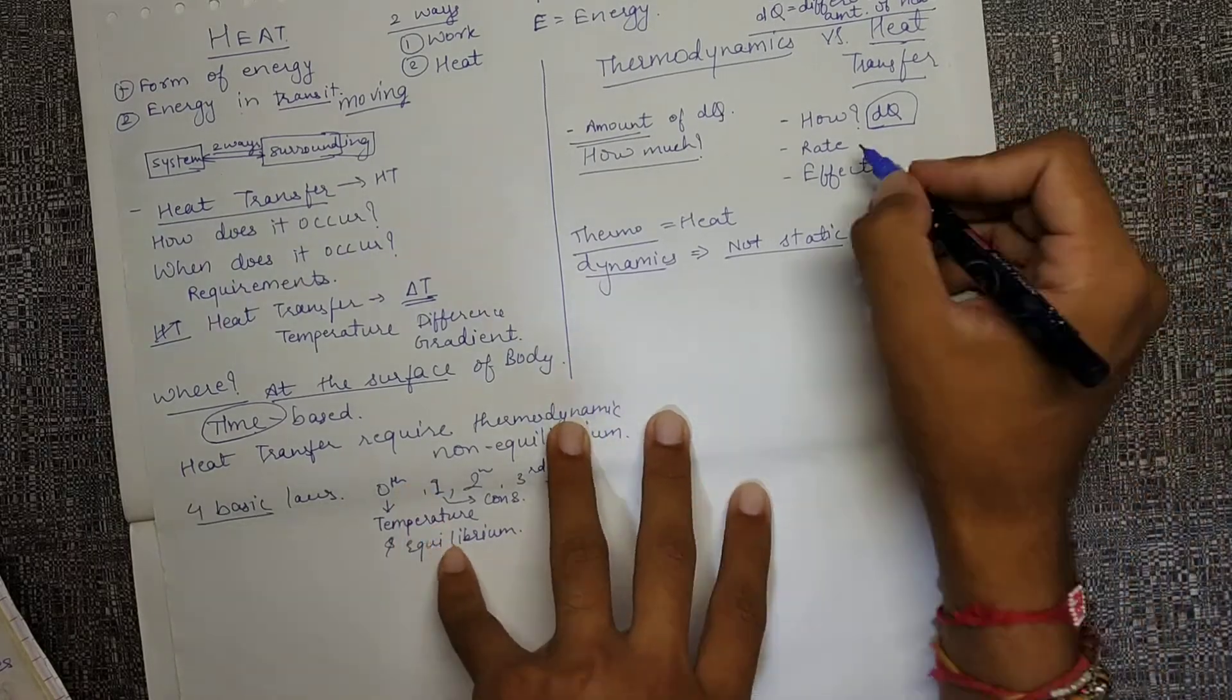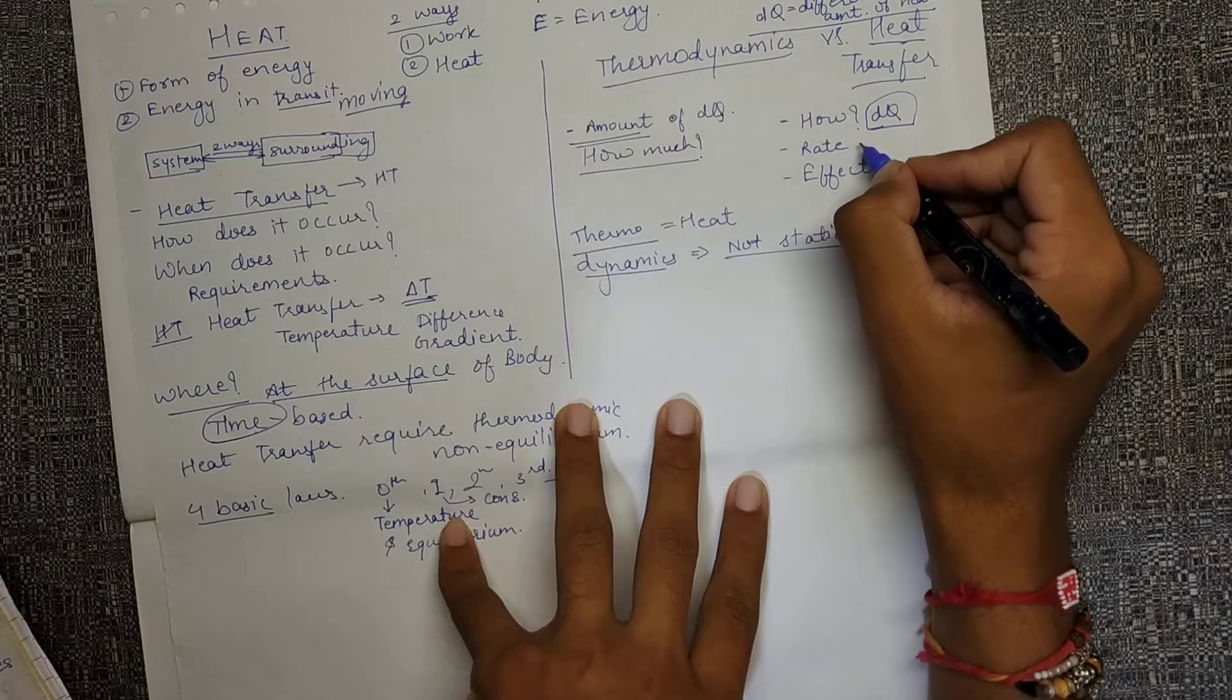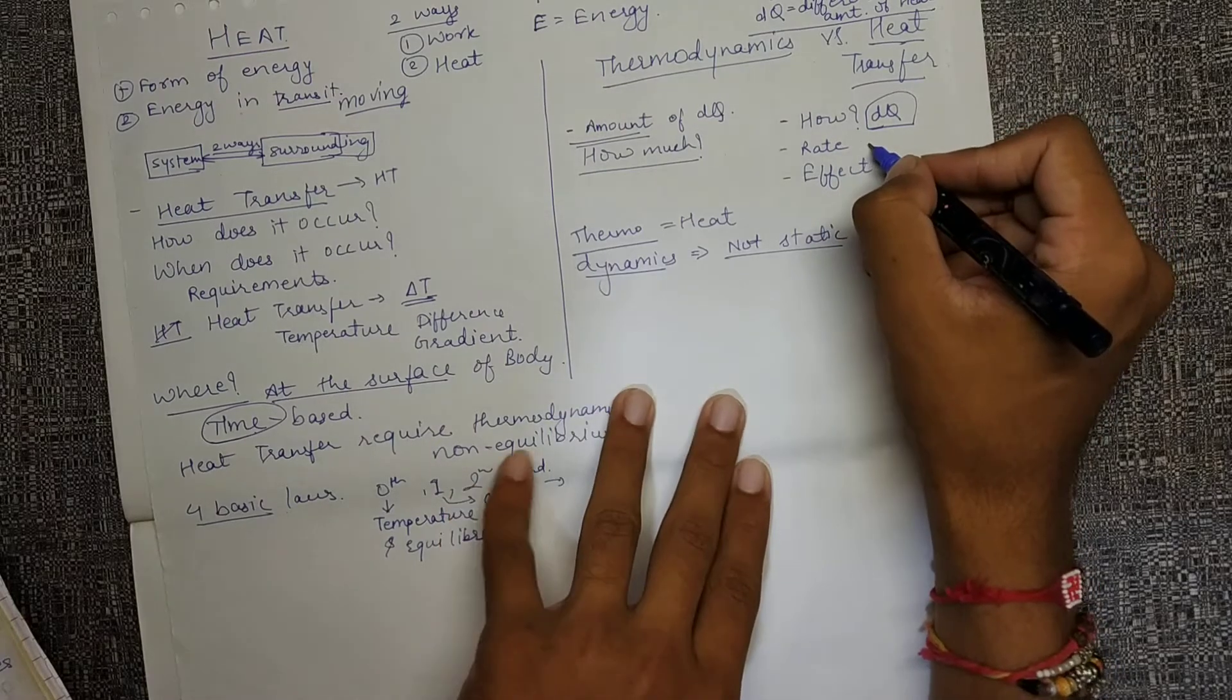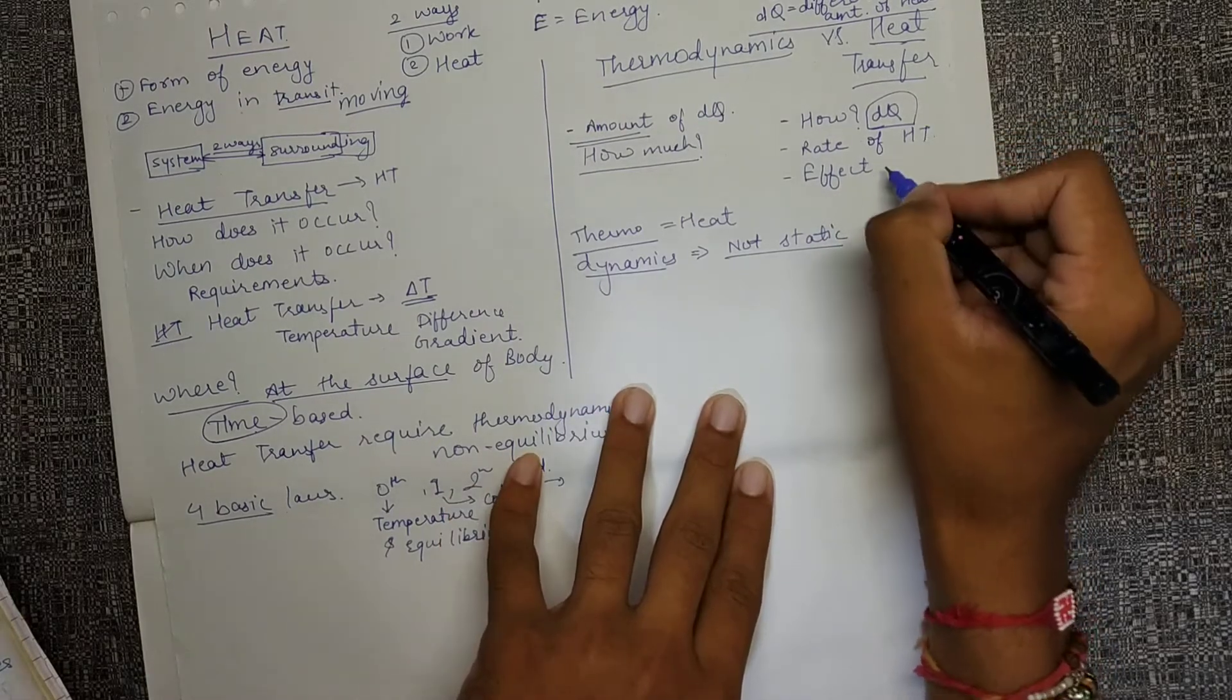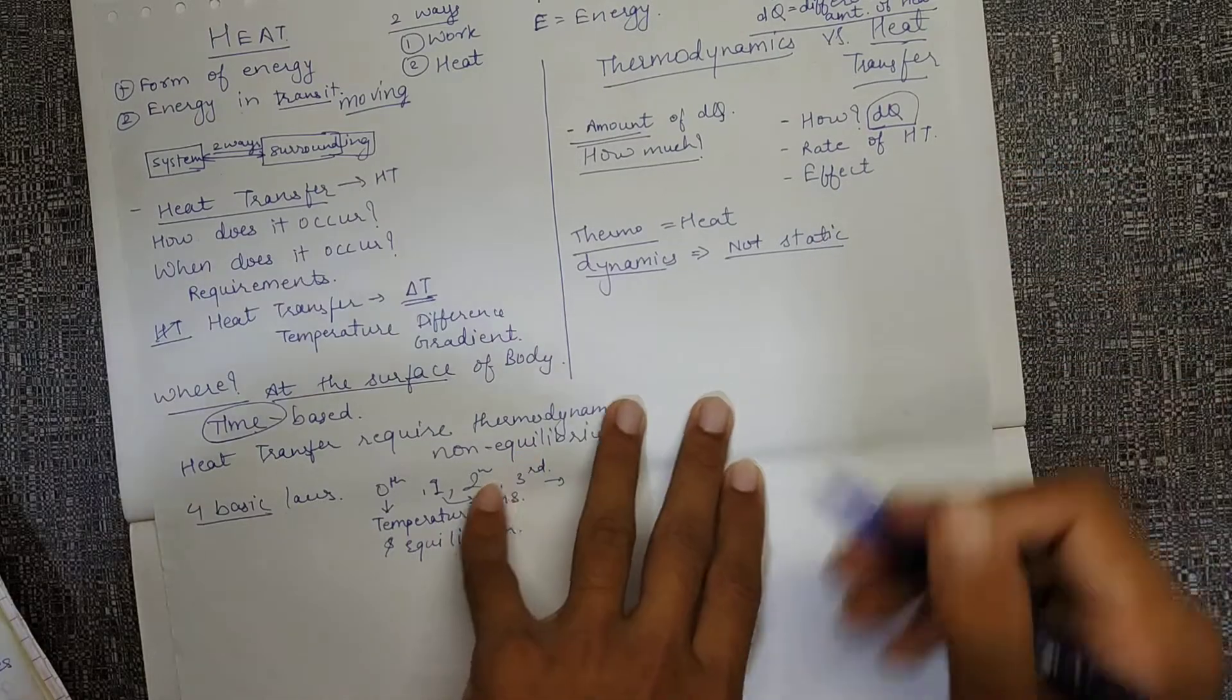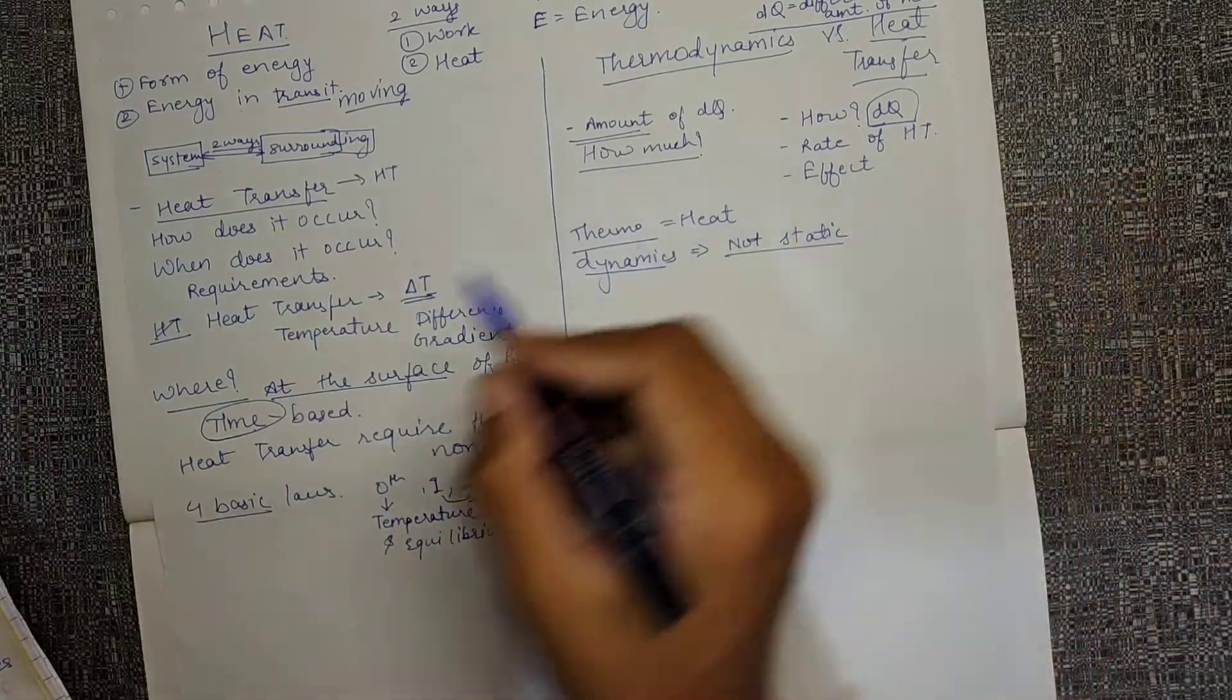How the differential heat was transferred is not clear. What was the rate of that heat transfer is not clear. What was the effect? What changes it brought to the system are not clear by studying thermodynamics.